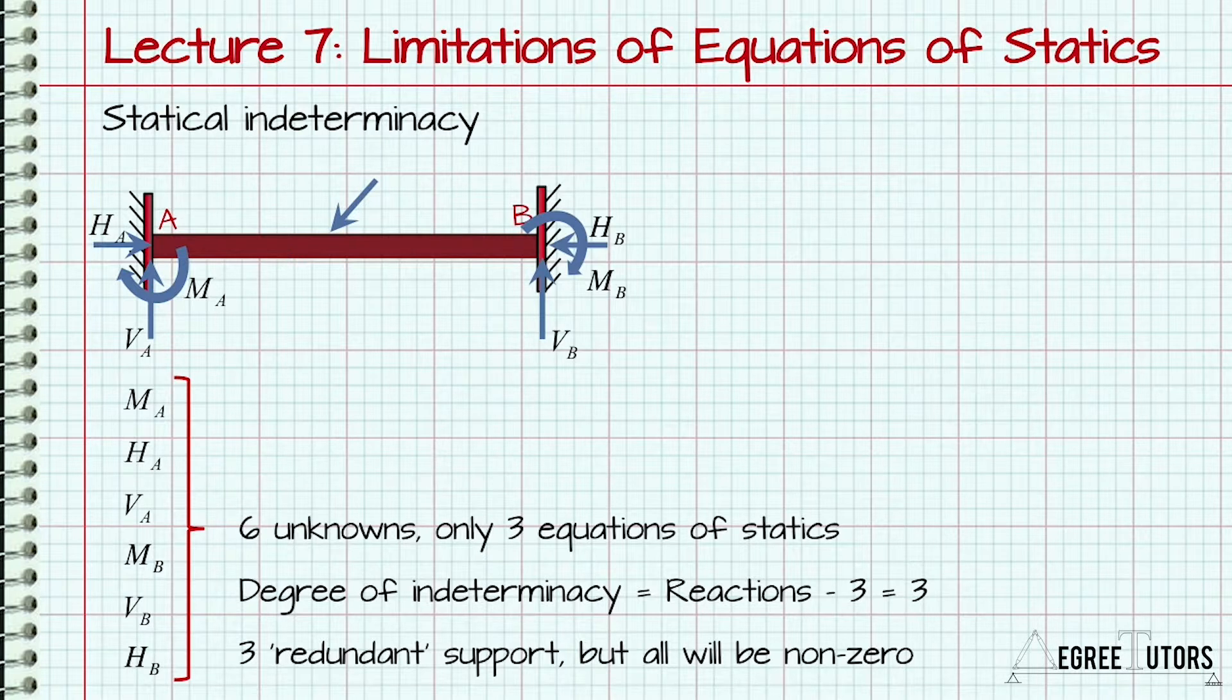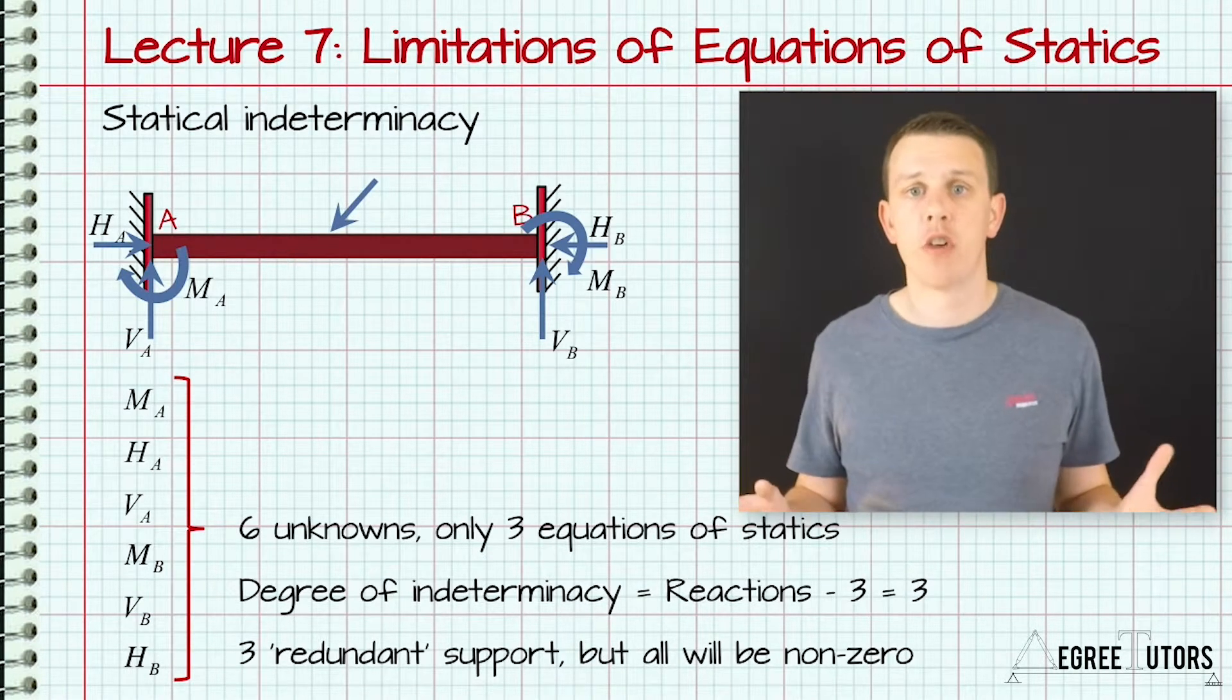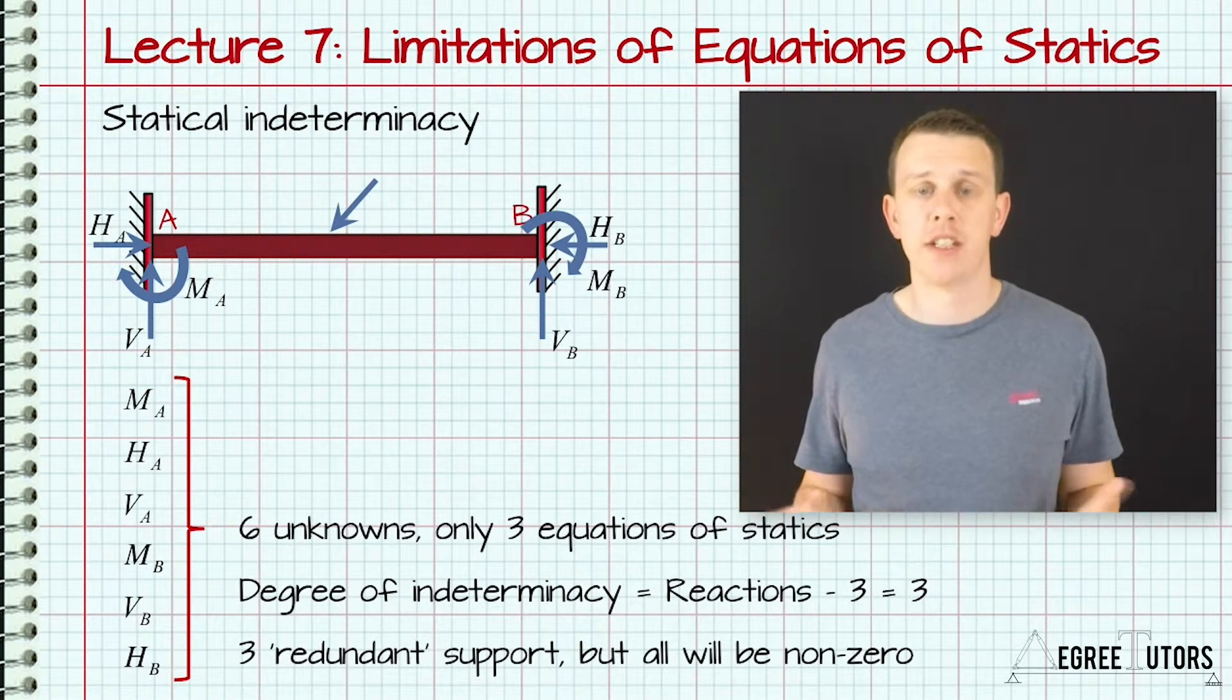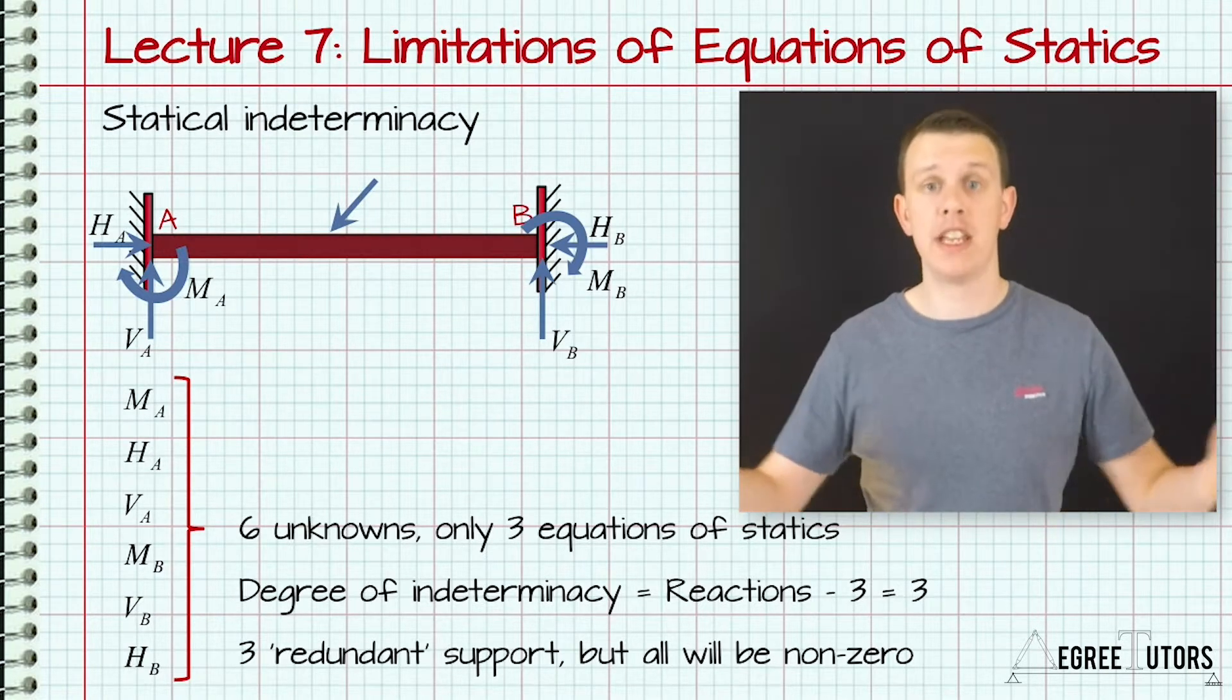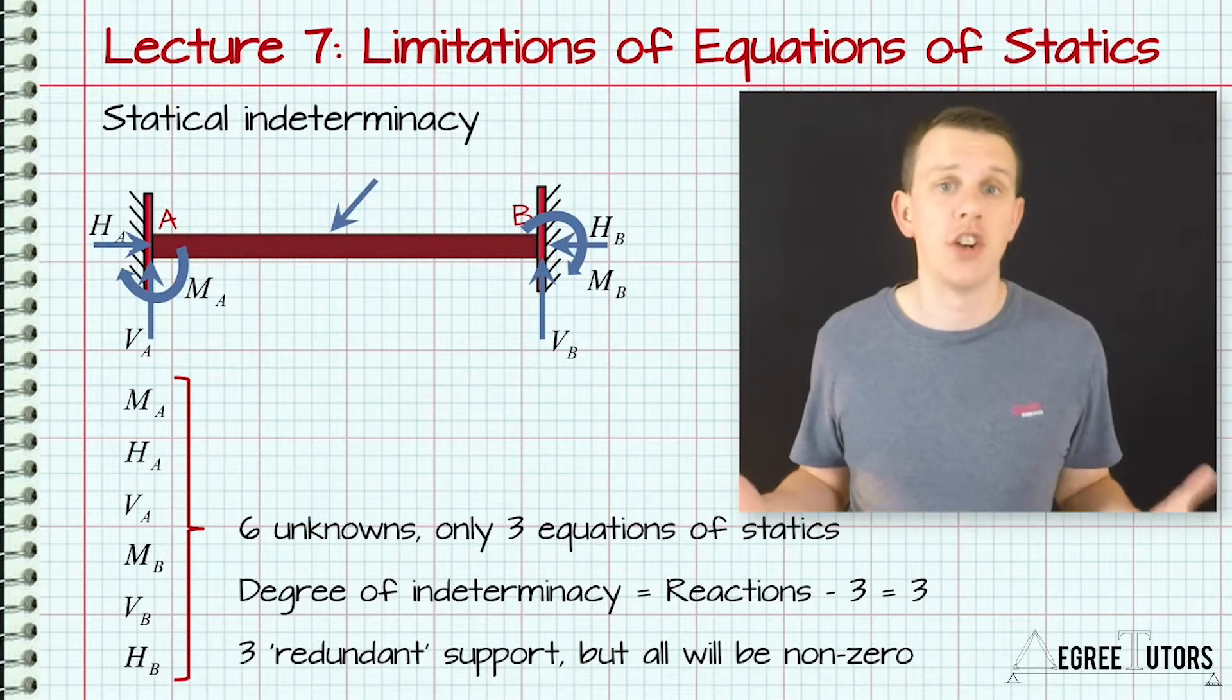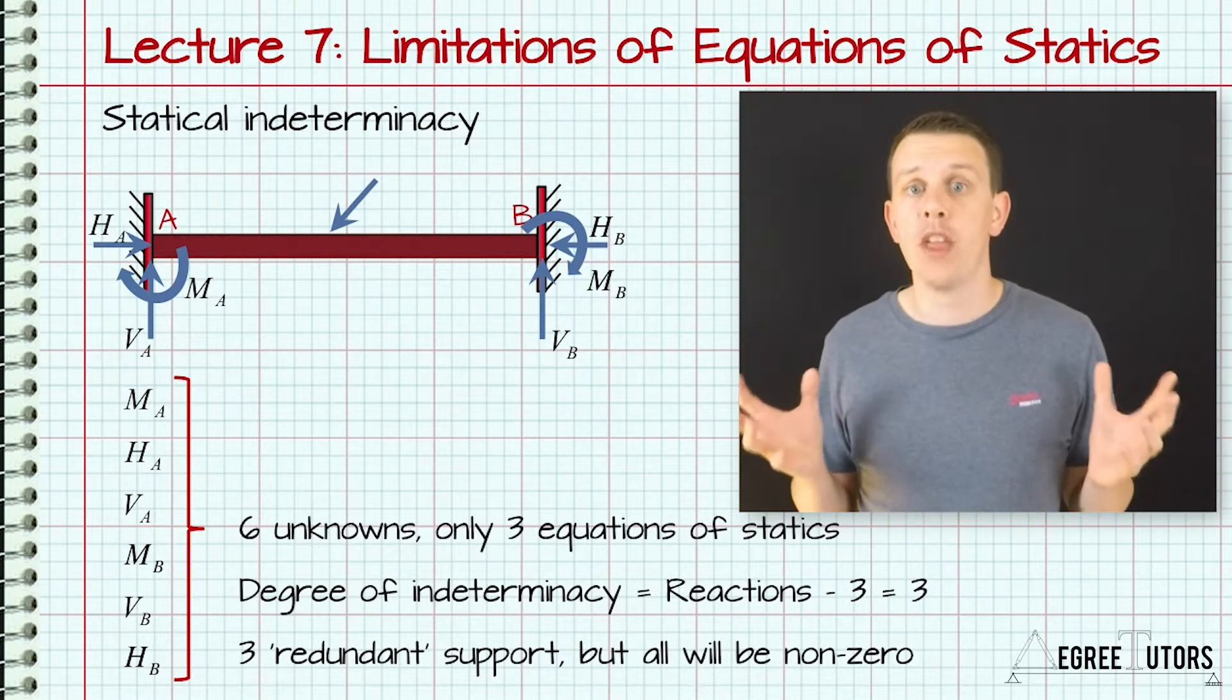So our 2D structure can have no more than three unknown reactions in order for it to be statically determinate. We can think of any additional reactions above three to be redundant. They're not required for static determinacy, but they will carry some load, so we do need some more sophisticated analyses to work out what those reactions are.